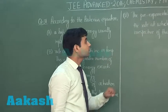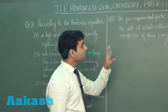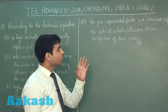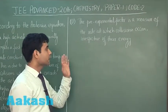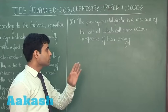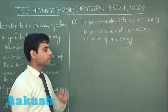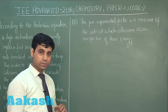The fourth option says the pre-exponential factor is a measure of the rate at which collisions occur irrespective of their energies.